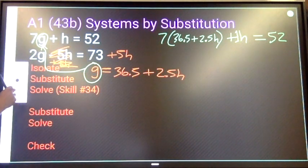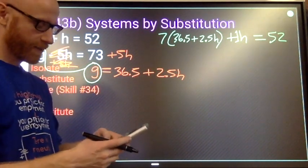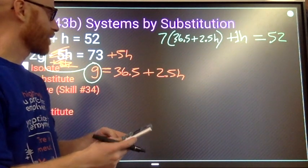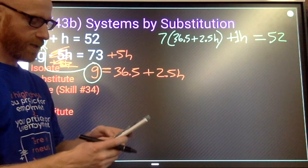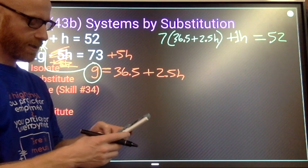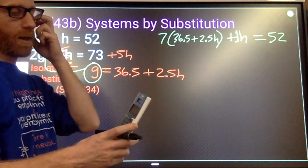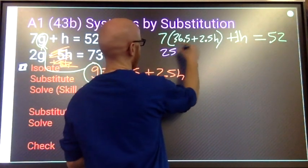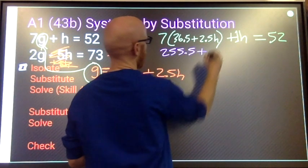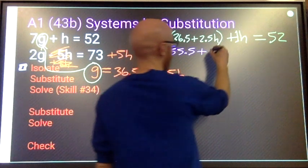Distribute. 7 times 36.5—gonna use a calculator for that. Interesting though, 365, 7 days a week, 365 days a year. That's an interesting coincidence of a pair of numbers. Alright, 255.5 plus 7 times 2.5—that's 14 and 3.5 is 17.5h.